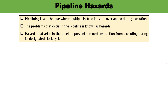What is pipelining? As I told you in the previous video, I used the very basic example of laundry to explain the concept. Pipelining is a technique where multiple instructions are actually overlapped during execution. But there are certain problems which may occur with that — the problems which occur in the pipeline are known as hazards. A hazard is a problem arising during pipelining that may create scenarios where the next instruction to be executed faces certain difficulties.